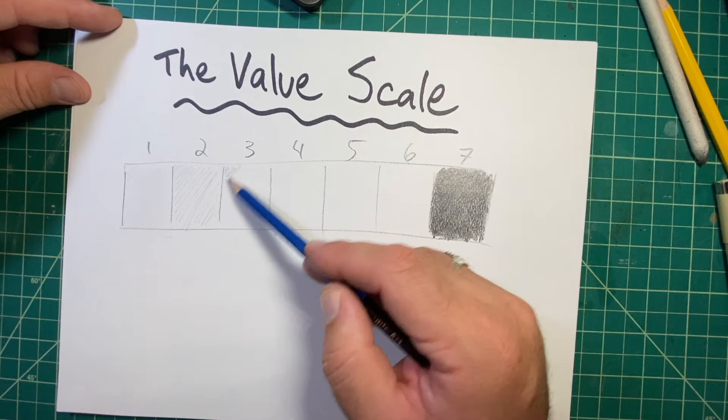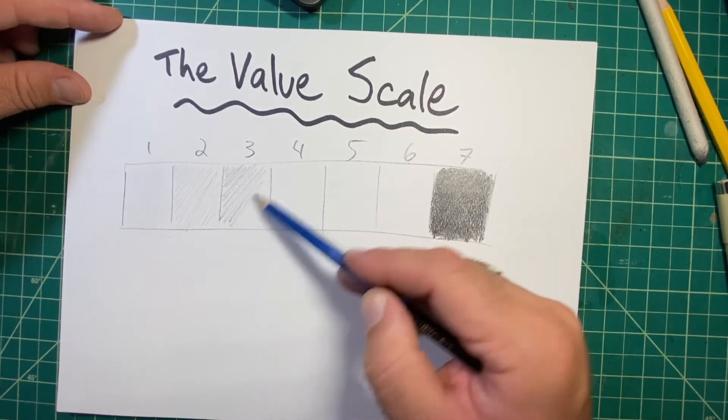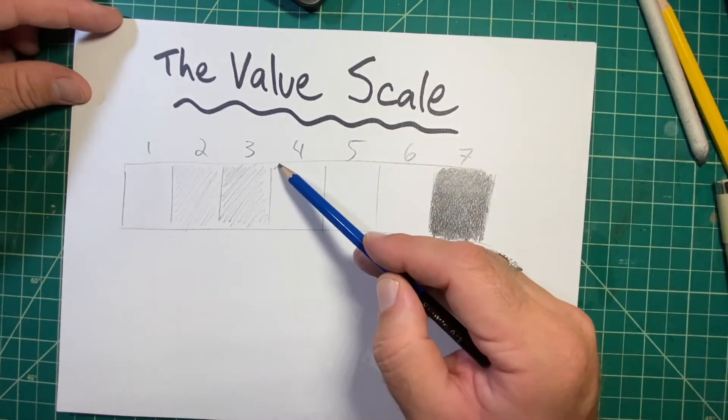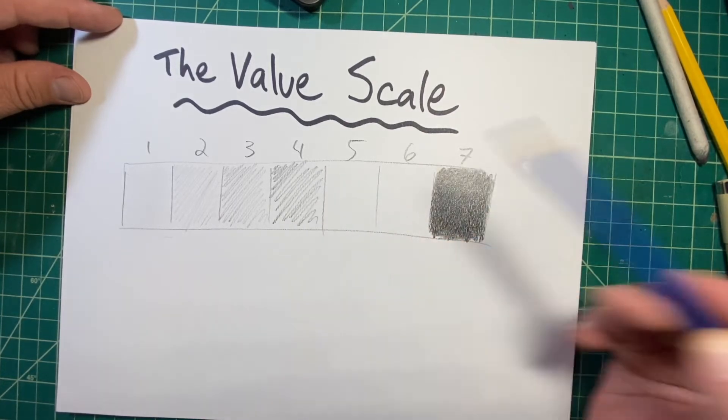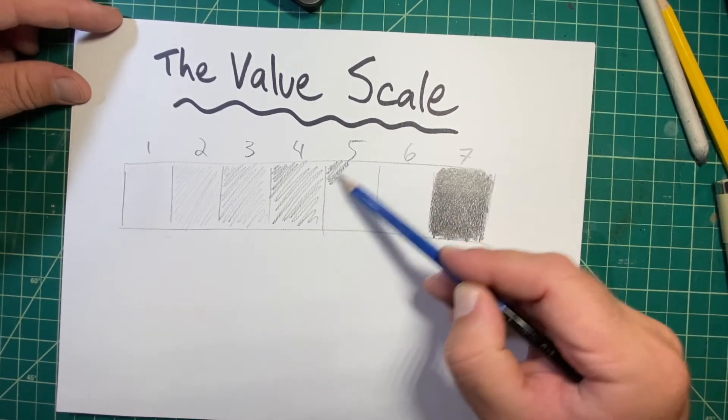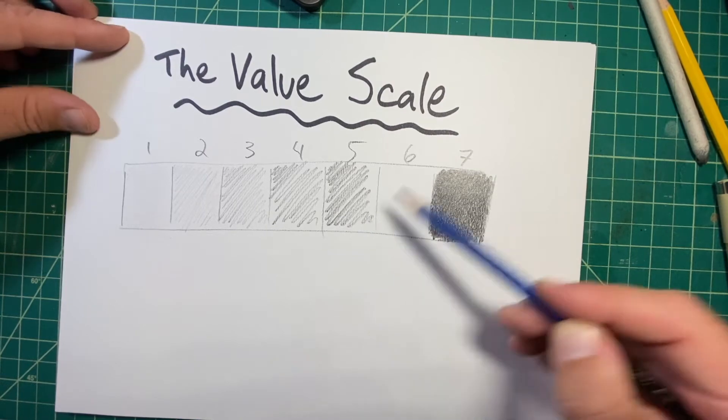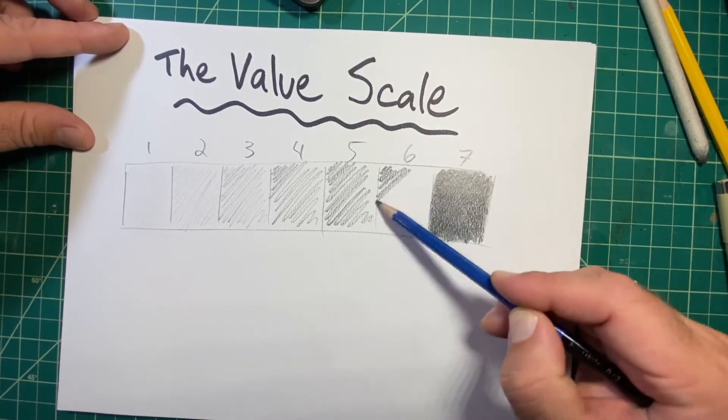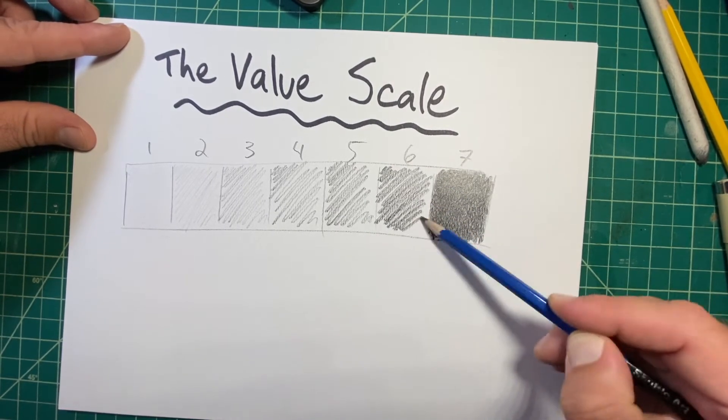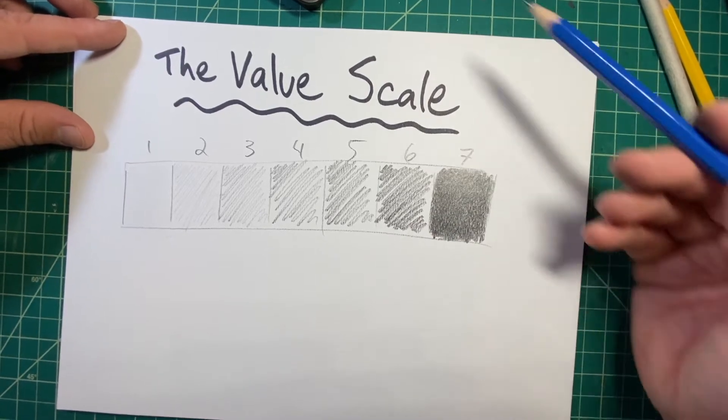Number three, I'm going to go over it a little bit darker. Four, darker still. Five, even darker. And six, even darker. So for each one, I just changed the pressure of my pencil.